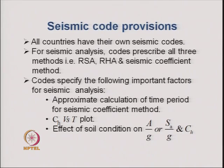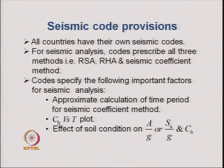For most structures, especially building structures, engineers use the seismic coefficient method for finding out the forces for which they would design the structures for earthquake. Almost all countries have their own seismic codes with several recommendations for seismic analysis and design. The codes specifically give recommendations for three kinds of analysis: response spectrum analysis, response time history analysis (RHA), and the seismic coefficient method. The codes also specify under which circumstances one should use each method.